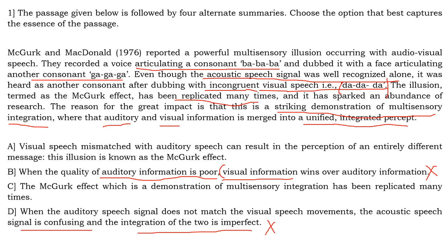So you have Options A and C as likely answers. Option A will be the better summary because a summary should contain the main information in the passage. Option C only talks about the replication of the McGurk effect without explaining what it is, whereas Option A clearly tells us what the McGurk effect is and what its result is. Option A gives you the crux of the passage — the most important points — so A is the answer.